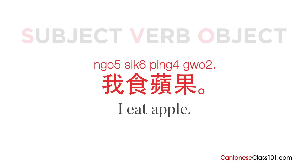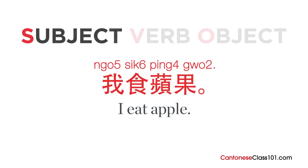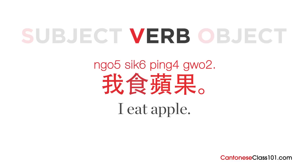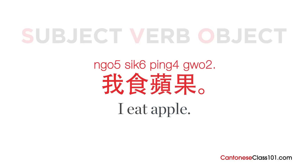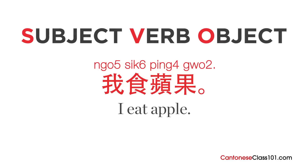Let's remove the particles to keep it simple. If we break down the Cantonese sentence, we get the subject 我, meaning 'I'. Then comes the verb 食, meaning 'eat'. And finally, we have the object 蘋果, meaning 'apple'. The word order for Cantonese is SVO — the same as English. Easy! And this is the basic word order for sentences in Cantonese.